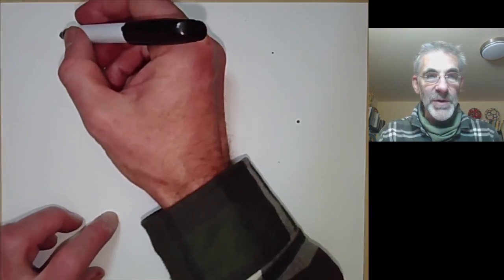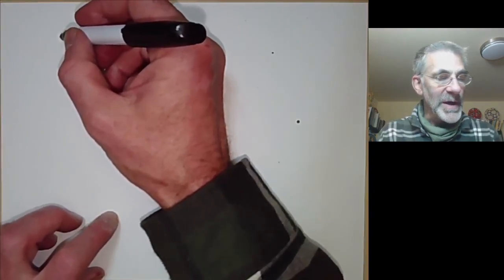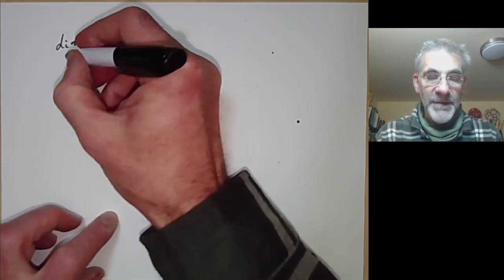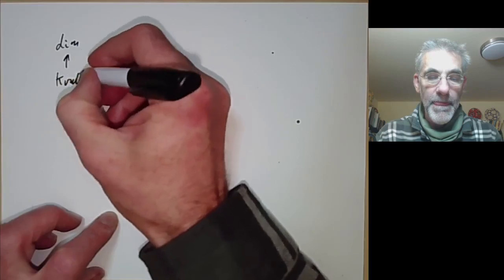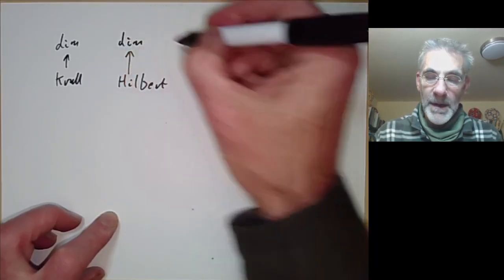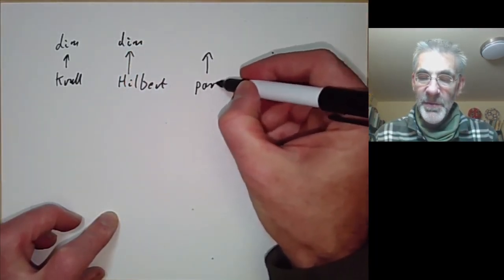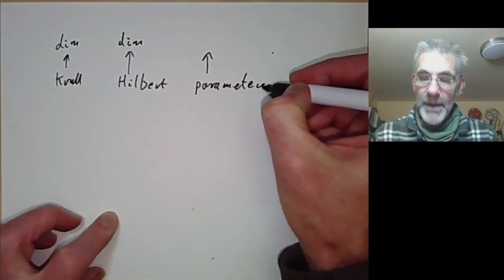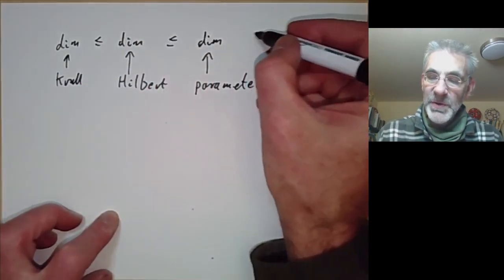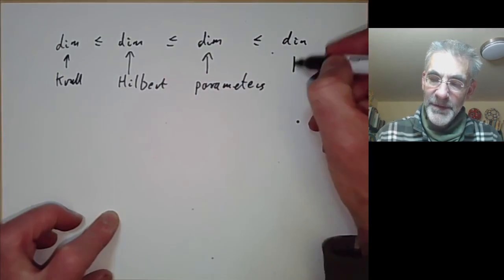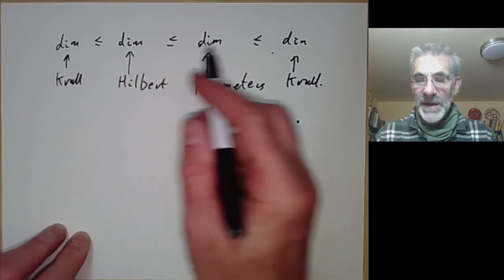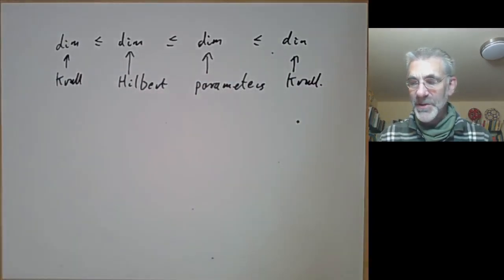More precisely, we're going to show that the three definitions of dimension that we gave are all equivalent. We gave a definition due to Krull, a definition using Hilbert polynomials, and a definition using a system of parameters. We have three notions of dimension, and what we're doing is proving certain inequalities. If we prove these three inequalities, we will prove that all three notions of dimension are the same.